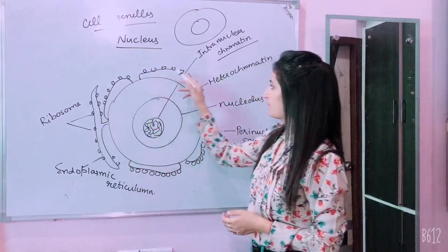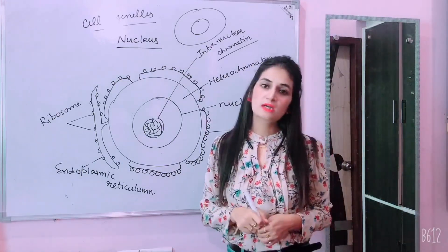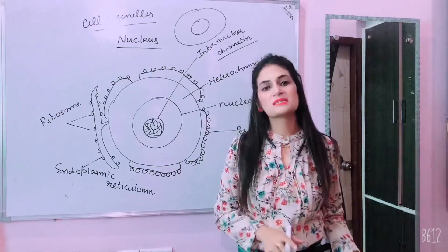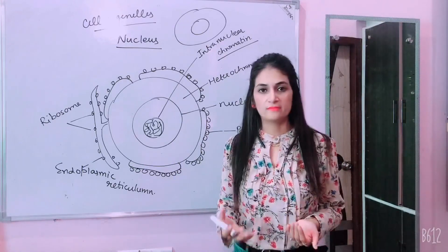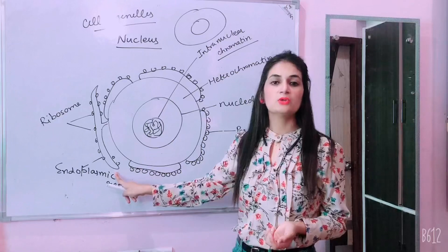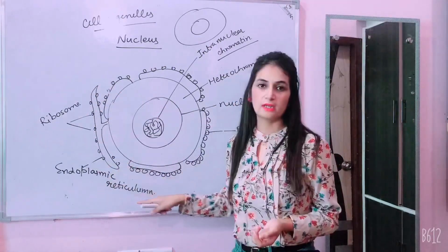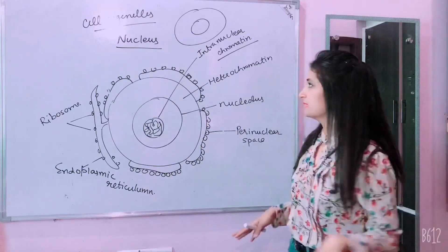Now I have all spherical structures here. This is ribosomes. What is ribosomes? It is called protein synthesis. Where will it be? It is called endoplasmic reticulum. It is endoplasmic reticulum. If there is a confusion, I will repeat it.